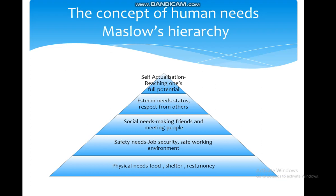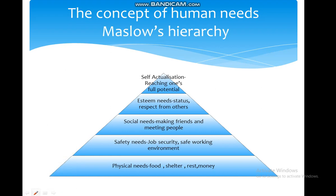He identified that a worker has five needs. The first basic or primary need of a worker is the physical needs. Under physical needs, Maslow identified that a human being needs food, shelter, and rest — and usually money satisfies all these physical needs. After meeting the physiological or physical needs, a worker moves to a higher order need, which we call the safety need.